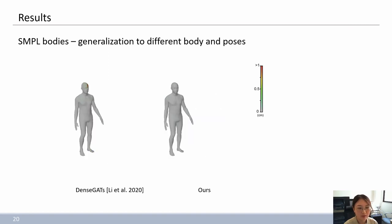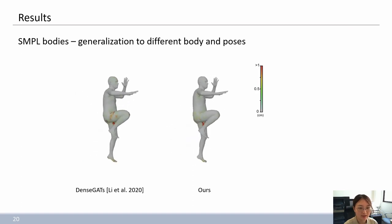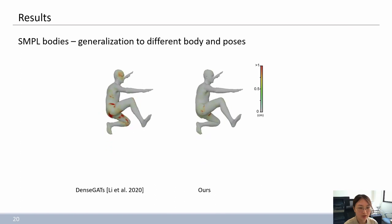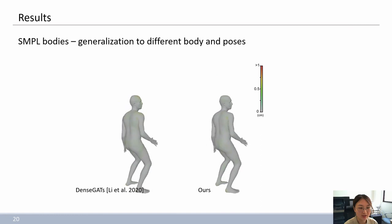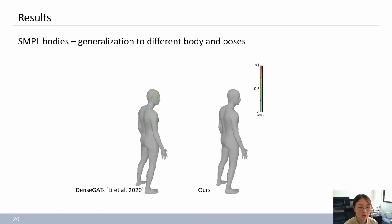Furthermore, with the SMPL data, we also demonstrate the generalization ability to the new character body and poses. As seen in the demo, a male character is performing the front-kicking motion, and the deformation results of dense GATs tend to generate large approximation errors in the region near joints. In contrast, our proposed method could make full use of prior feature knowledge and outperform dense GATs on unseen cases.